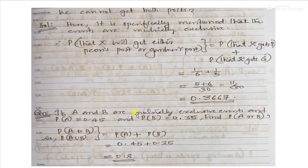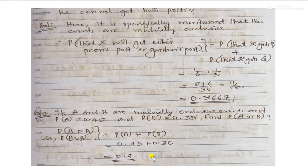If A and B are mutually exclusive events, and the probability of A equals 0.45 and the probability of B equals 0.35, find the probability of A or B, that is P(A union B). P(A union B) is equal to the sum of individual probabilities: 0.45 plus 0.35, which equals 0.80.